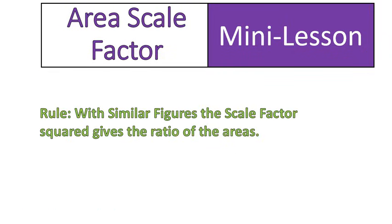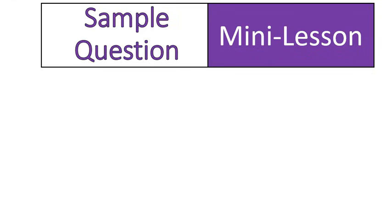So from those three examples, we can come to this rule. That when you have similar figures, the scale factor squared gives you the ratio of the areas. And that's going to be a consistent rule. I just wanted to show you three examples that kind of proved that that rule was true. Now we're going to go on to actually using that rule inside of a sample question.